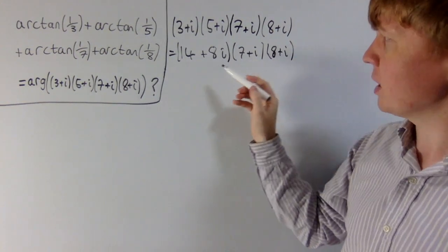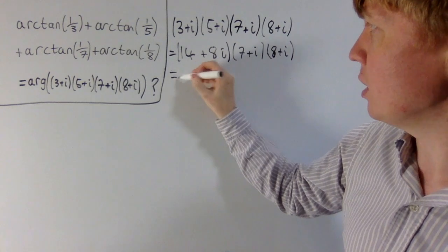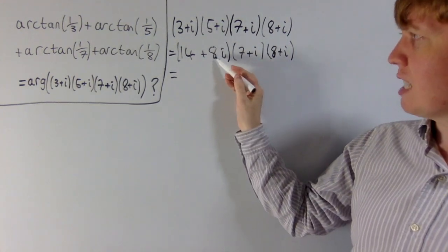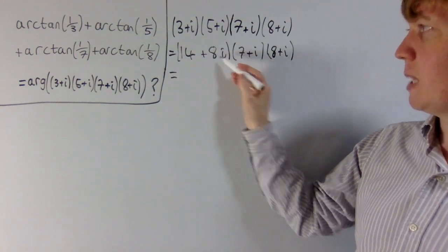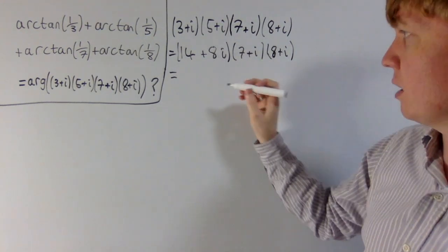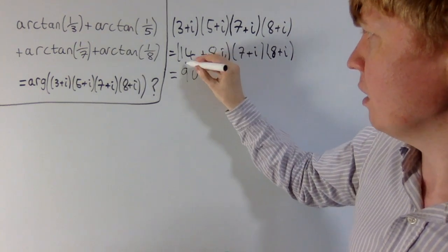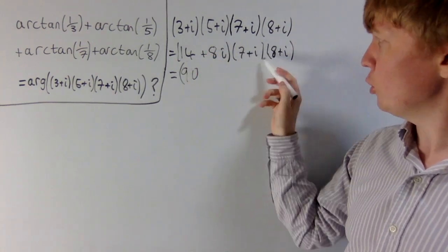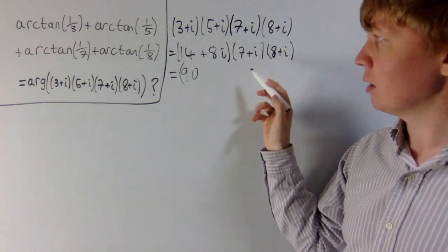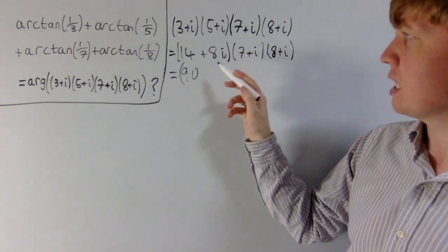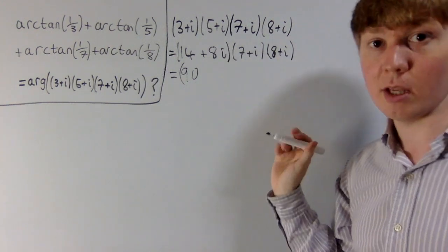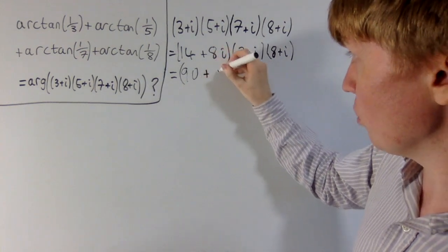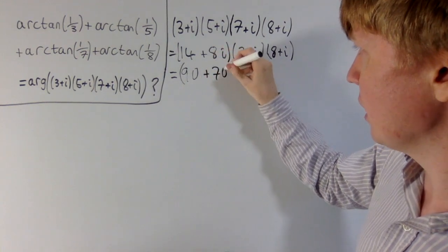Multiplying (fourteen plus eight i) by (seven plus i): the real part is fourteen times seven equals ninety-eight, minus eight from the eight i times i term, giving ninety. The imaginary part is fourteen times i, giving fourteen, plus seven times eight which is fifty-six, so adding these gives seventy i. So the result is ninety plus seventy i.